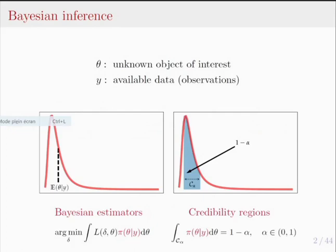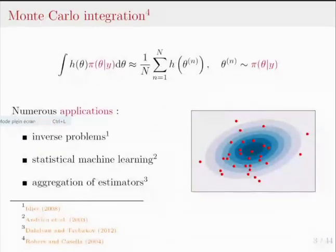It is particularly important to estimate credibility regions, especially in problems where you do not have a ground truth, such as in astronomical problems or other complicated problems. Calculating Bayesian estimators and estimating credibility regions all boil down to solving an integration problem with respect to your posterior density.